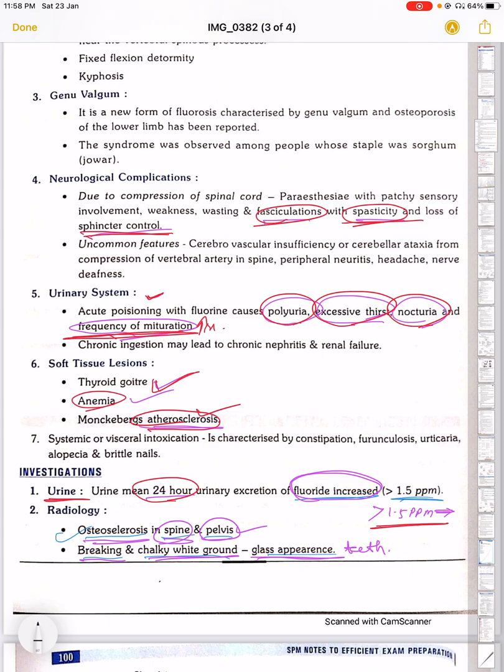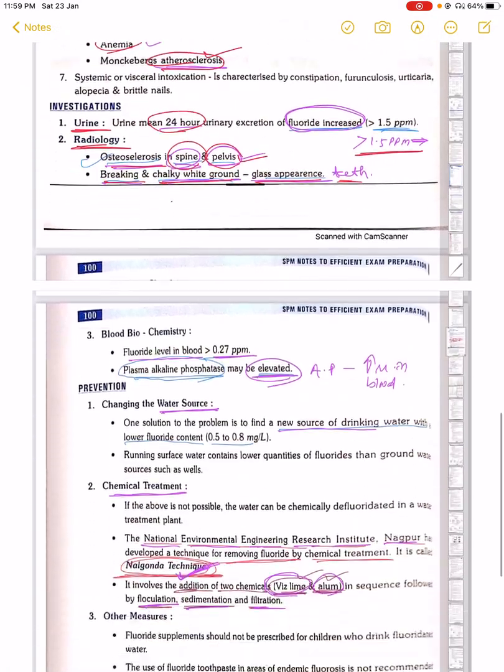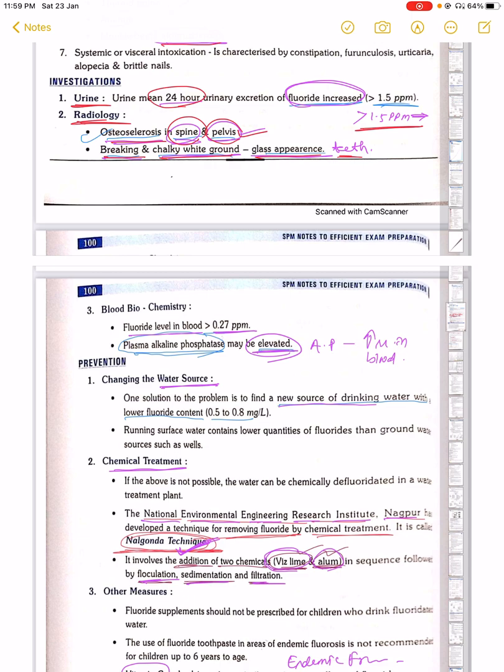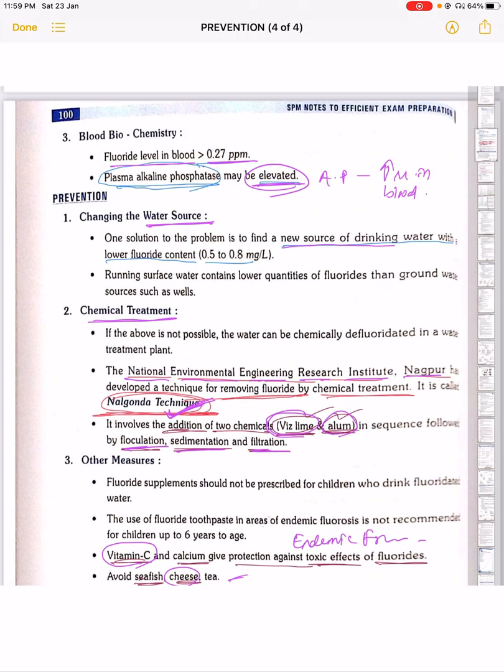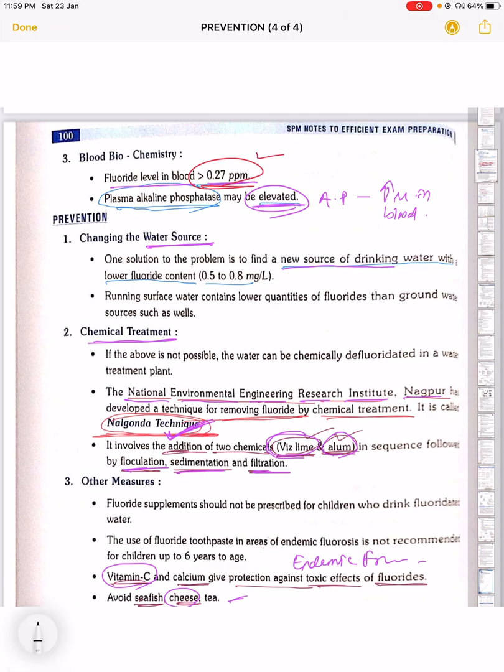In radiological investigation, we will see osteosclerosis of spine and pelvis and chalky white ground glass appearance of the teeth. In blood investigations, fluoride level in blood increases to 0.27 parts per million, and plasma alkaline phosphatase is also elevated.